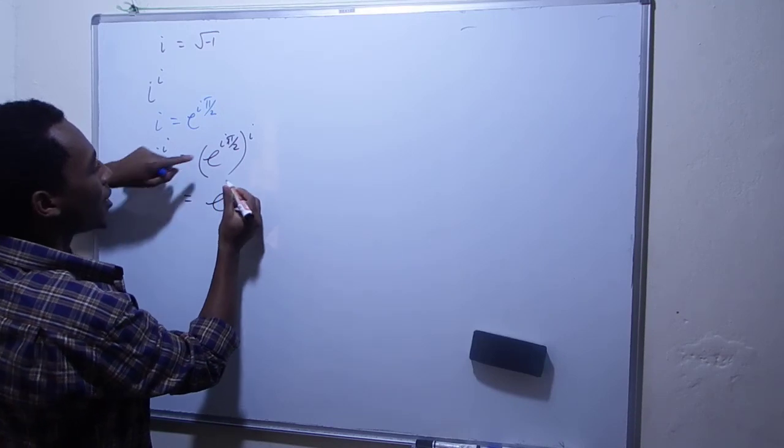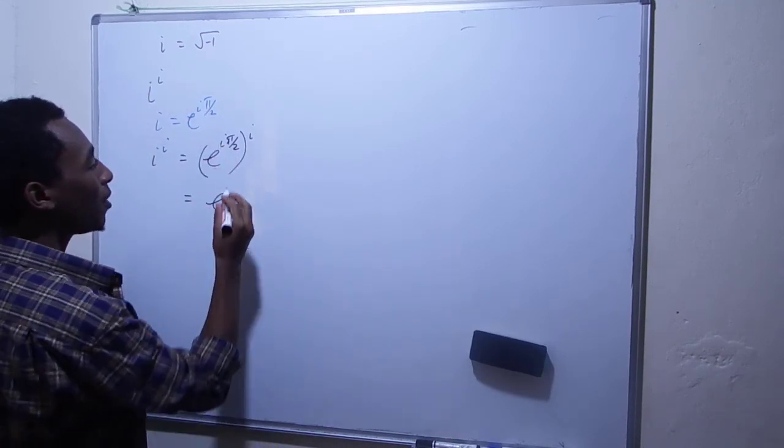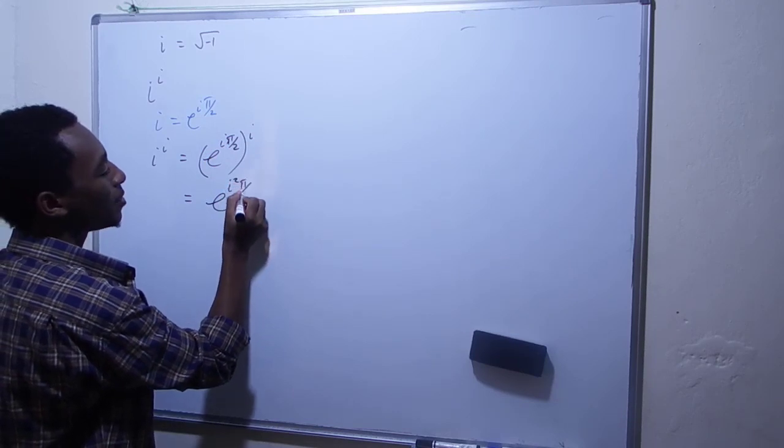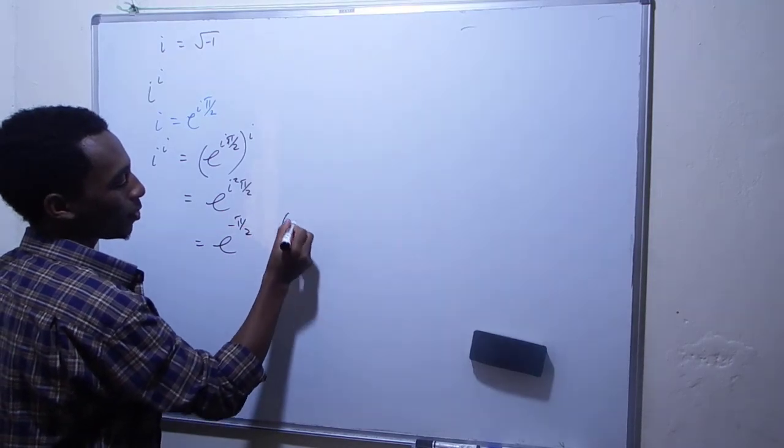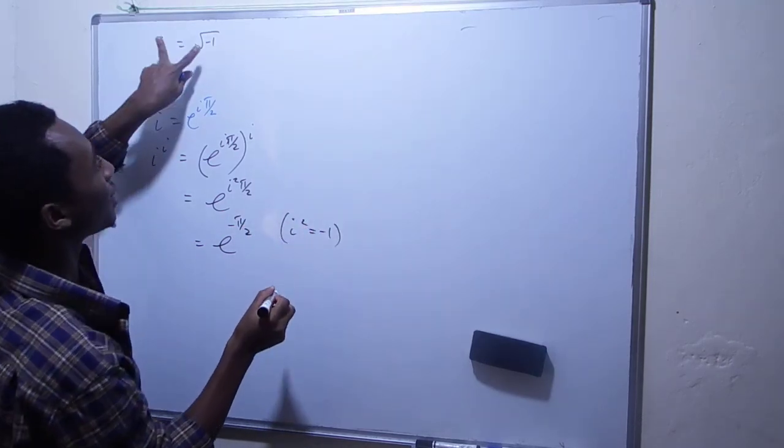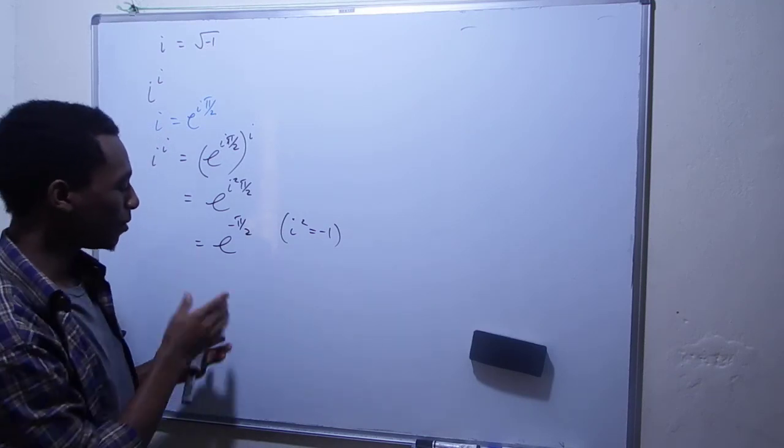From the laws of indices, I multiply the powers, so I have i squared times π/2. That's e to the power of negative π/2, because i squared is negative 1. So this is one way of doing it.